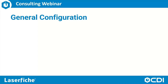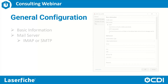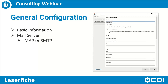To configure Laserfiche Email Archive profiles, we first configure our basic information, which includes the profile name and the mail server type. It is highly recommended to use IMAP. SMTP is deprecated and does require firewall and network configurations. CDI support can assist with that if needed, but IMAP is the recommended approach.